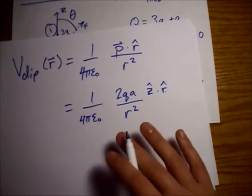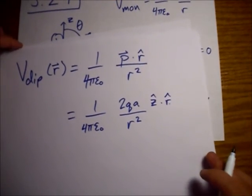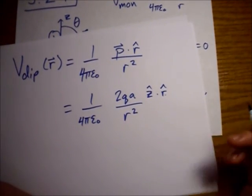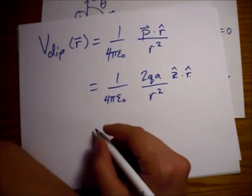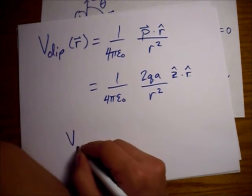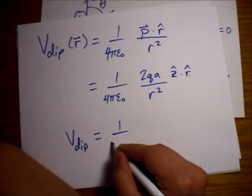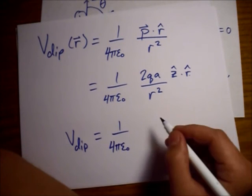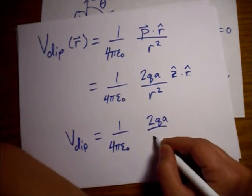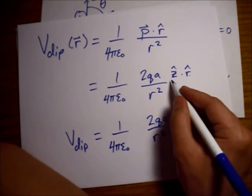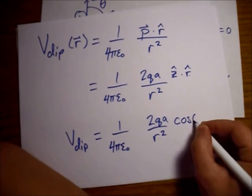And theta, because this is the z axis, happens to be the same theta in our spherical coordinate system. So, to write this in spherical coordinates, as Griffiths wanted us to, we've got our 1 over 4πε₀, of course, 2qa over r squared, and then this just turned into a cosine of theta.